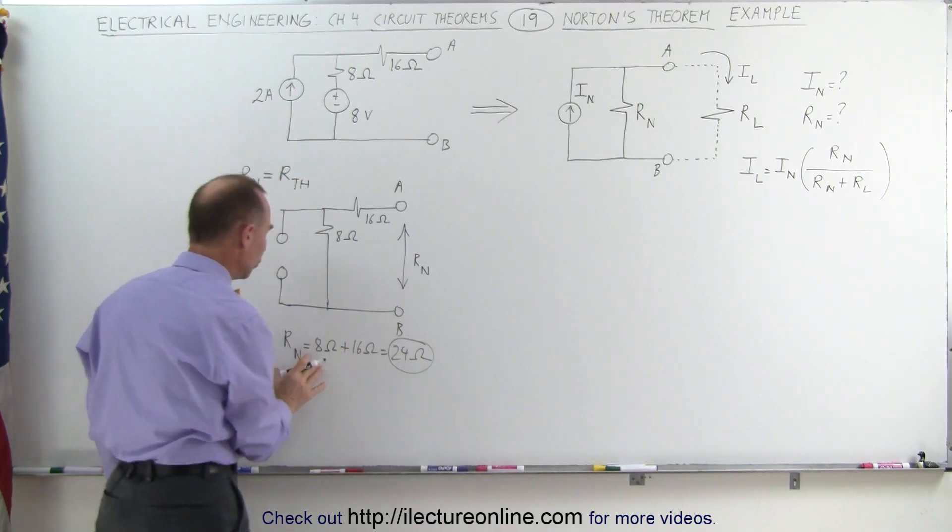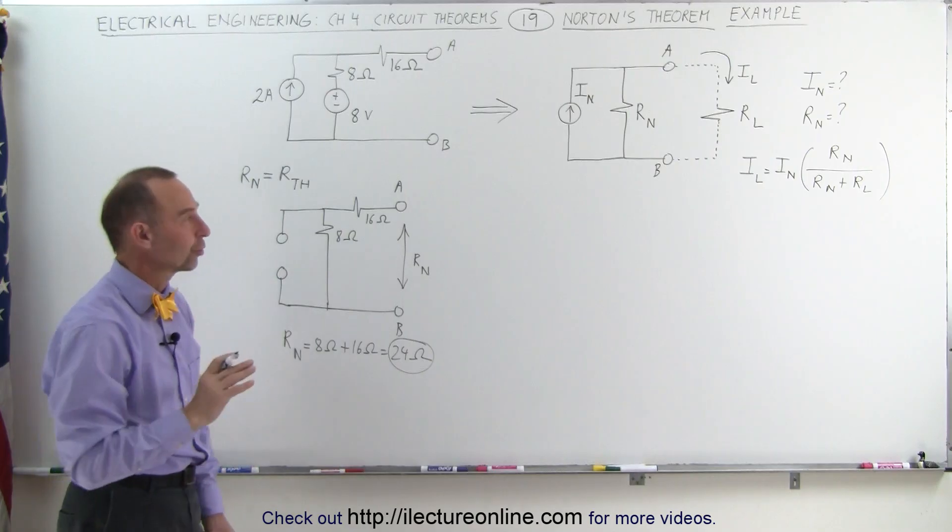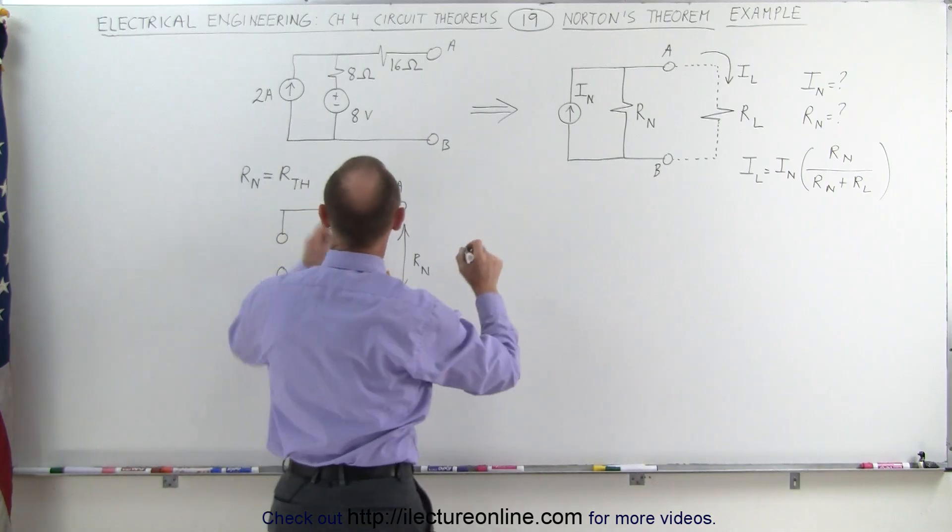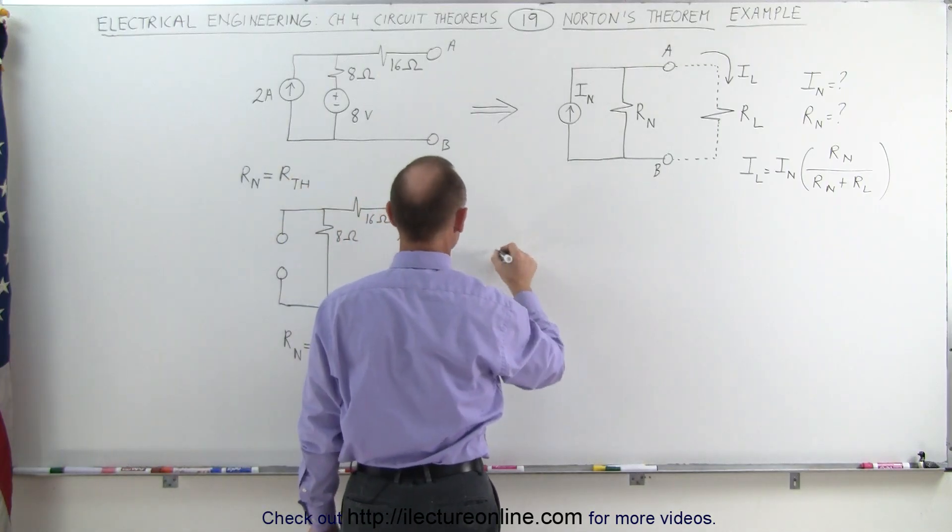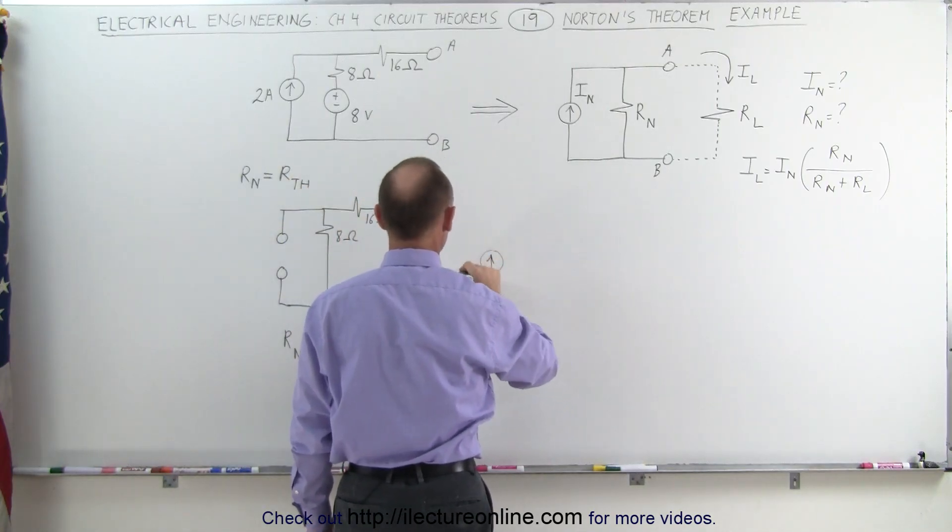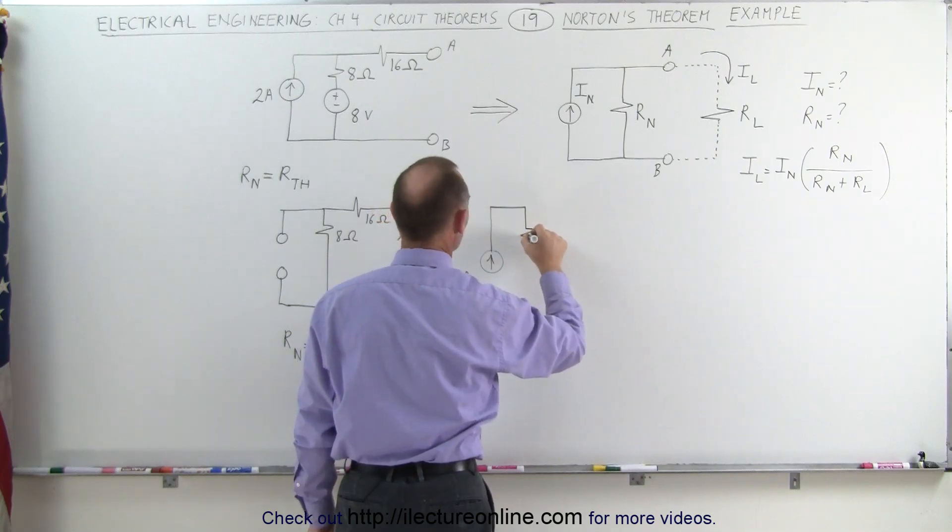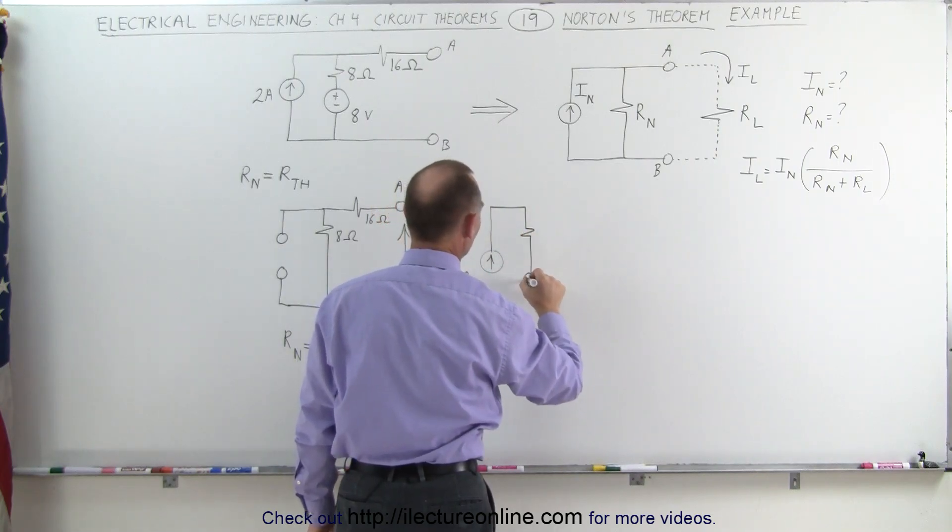Now we have the Norton resistance, let's find the Norton current. To get that what we need to do is take the original circuit, so let's redraw that. Here's the 2 amp source, the 8 ohm resistor,